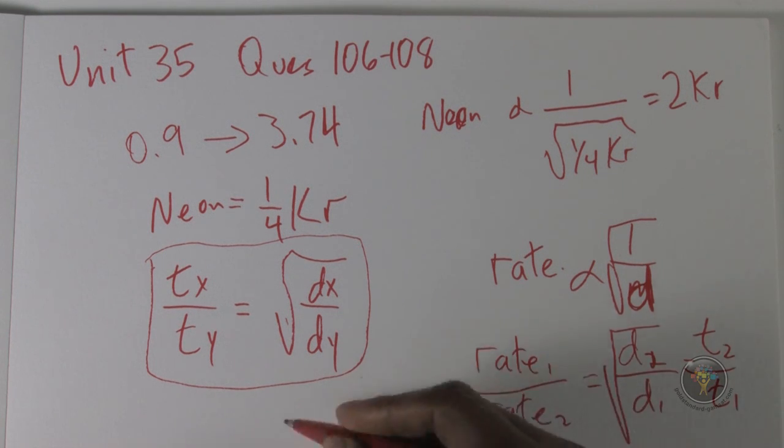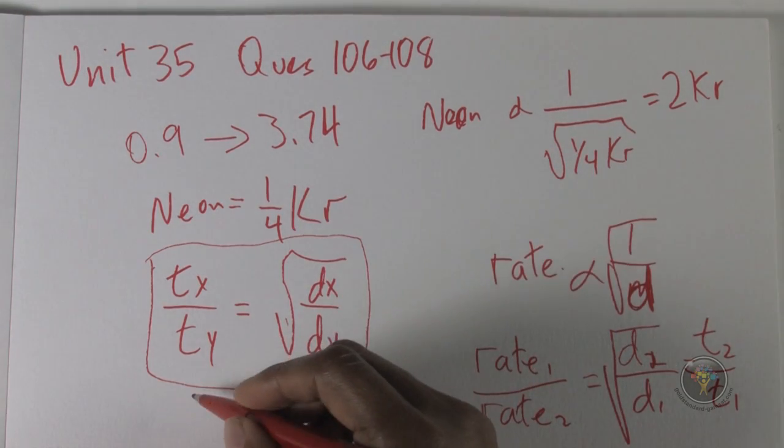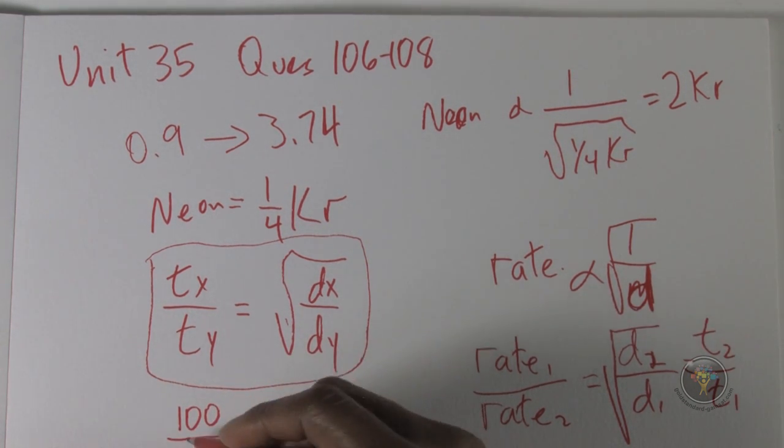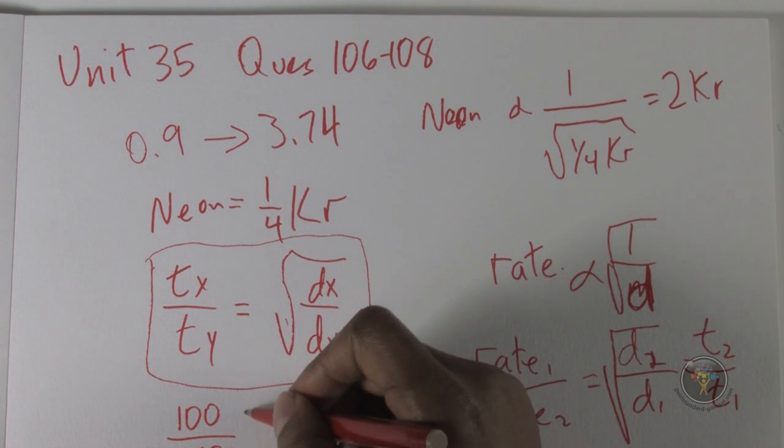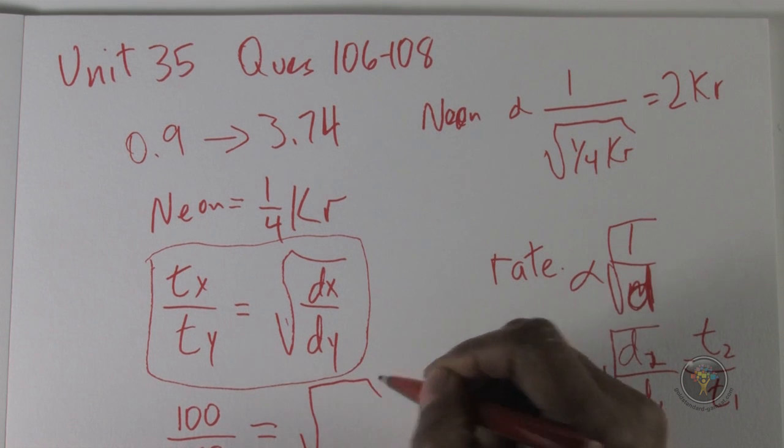And so we will use the time of X over time of Y. So we have 100 over 250, that's the seconds, that's the time that's been taken.